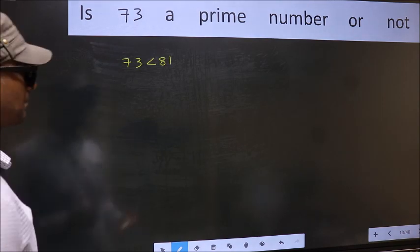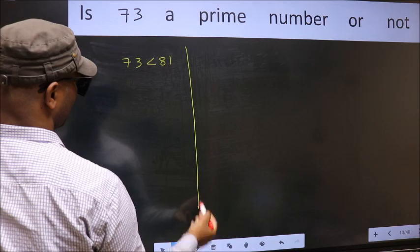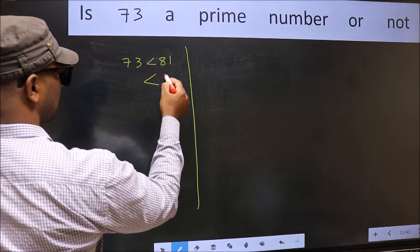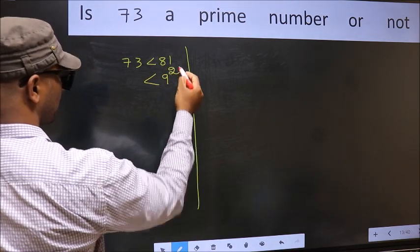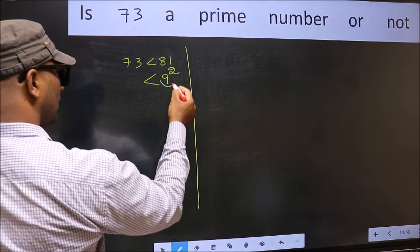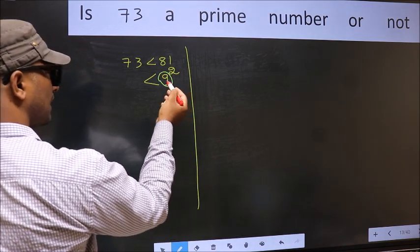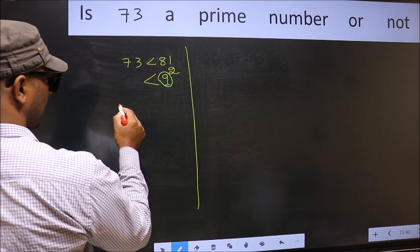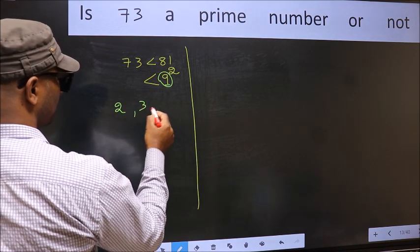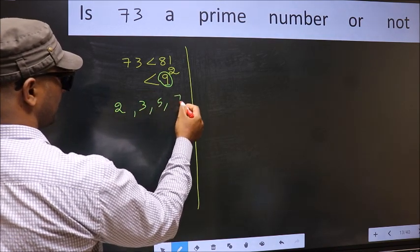Next, 81 is nothing but 9 square. Now you write all the prime numbers less than this number. They are 2, 3, 5 and 7.